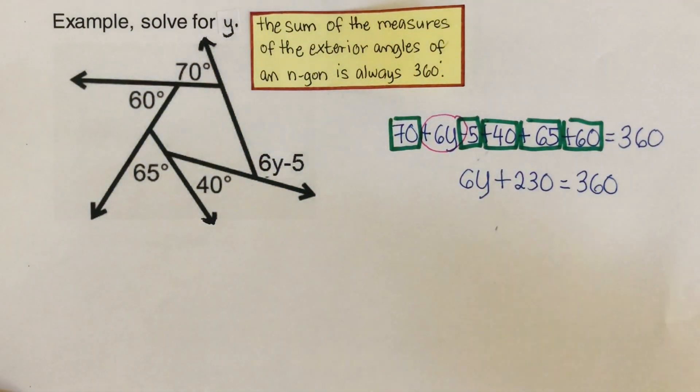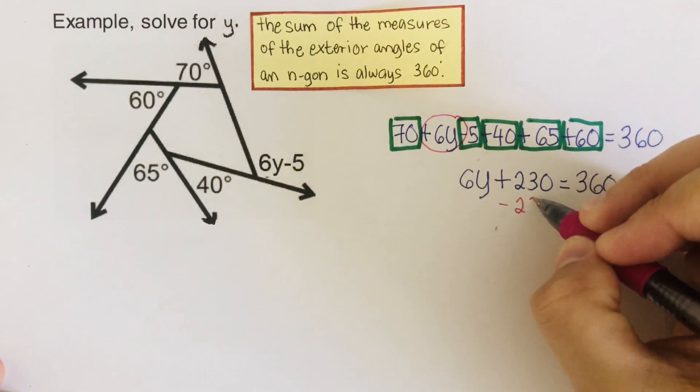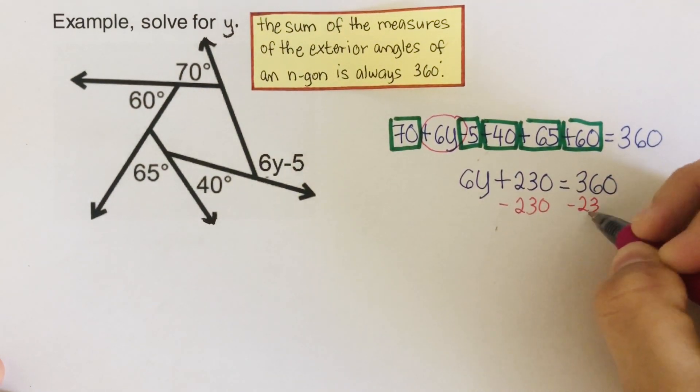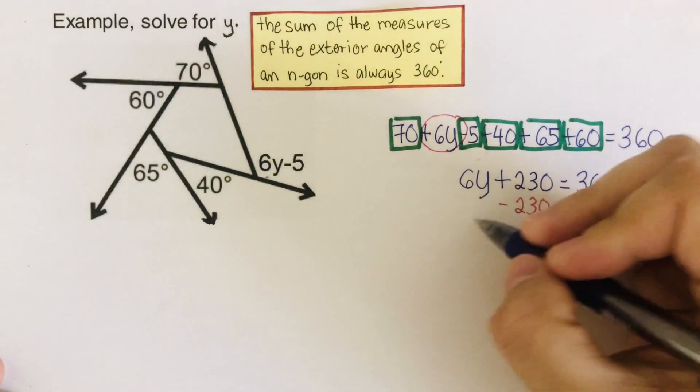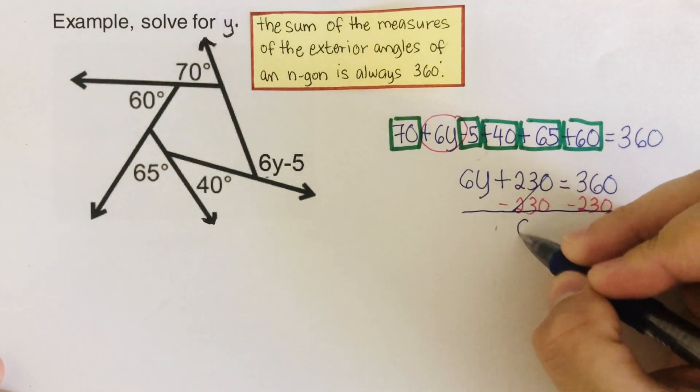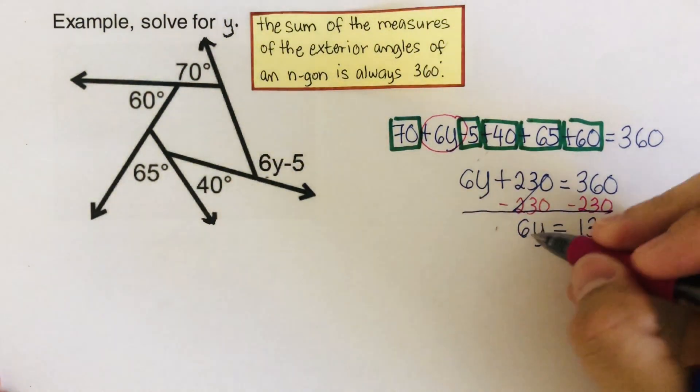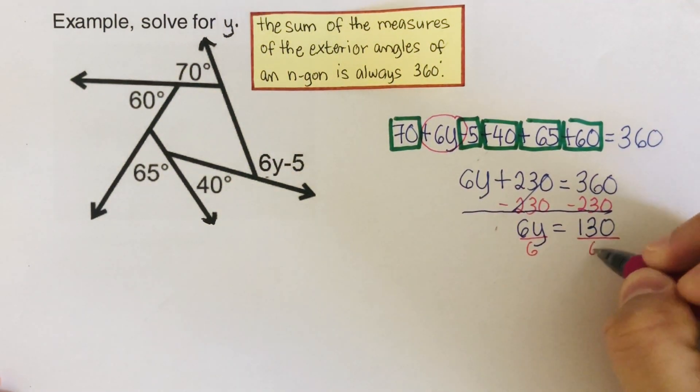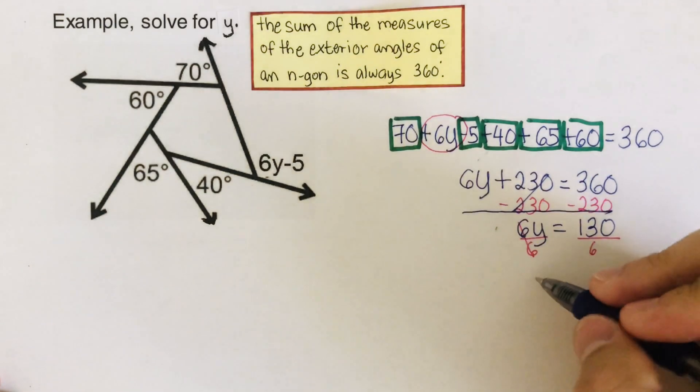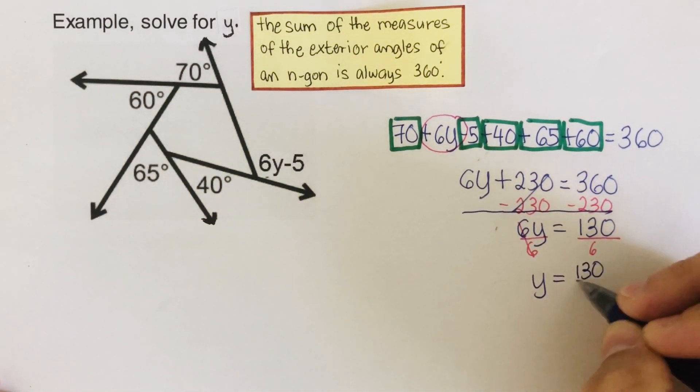We're going to subtract 230 from both sides, so we are left with 6y equals 130. Then we divide both sides by 6, so we are left with y equals 130 over 6.